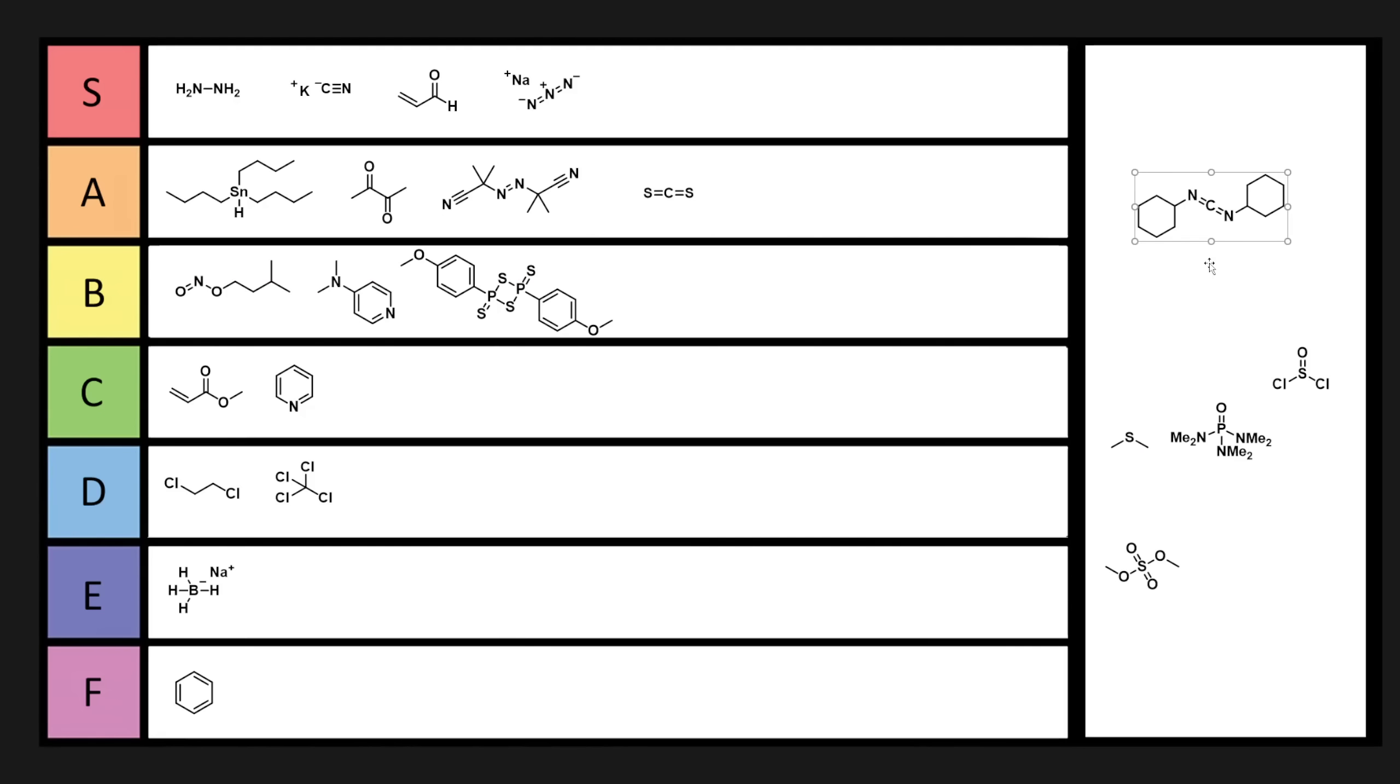DCC is a white solid. It reacts with water to make dicyclohexyl urea, which is a potent allergen and an allergen sensitizer. If you get this on you, the more you work with it, the more allergic you are to urea-type compounds. Similar coupling reagents like Pybop or Hatu also have similar allergen properties. I'm going to put DCC in C because it has so many C's in its name.